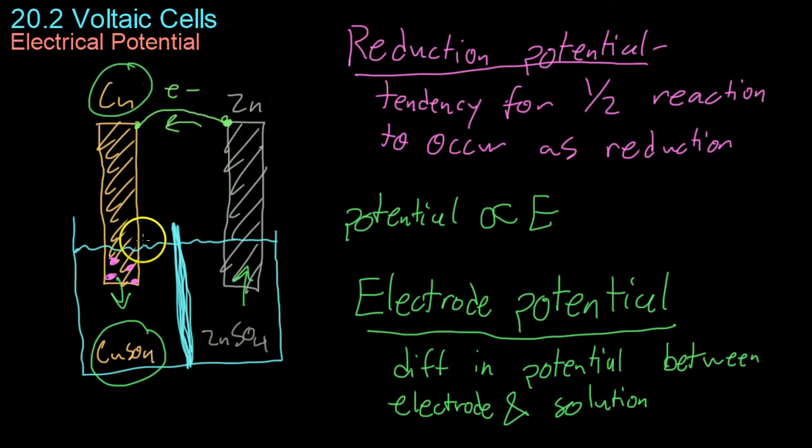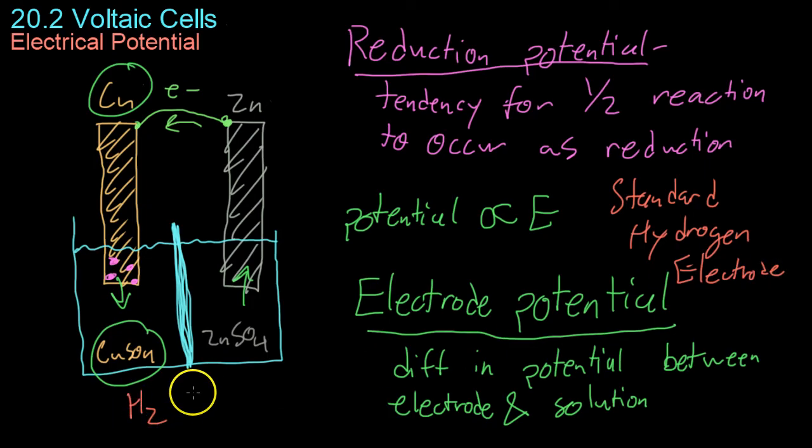However, to measure the actual potential of one half cell, you can connect it to what is known as a standard hydrogen electrode. A standard hydrogen electrode basically has a tube of hydrogen that will ionize into H+ ions and electrons as part of a standard anodic reaction. In other words, you can measure how quickly a half cell will oxidize this hydrogen. This measure is what is known as the standard electrode potential.